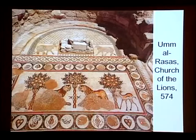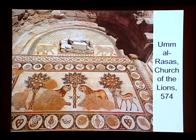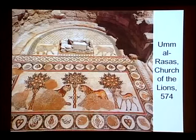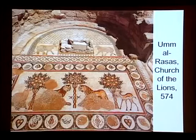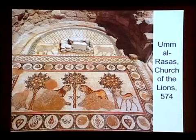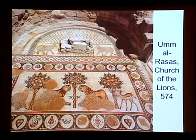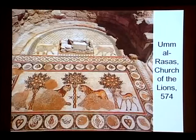You have birds here that were completely destroyed, but then the birds here are left undamaged. You have an obliterated bird here and here and here, but then undamaged birds here and here. And so in this case, about half of the animals are destroyed. The other half are left undamaged, which is peculiar.